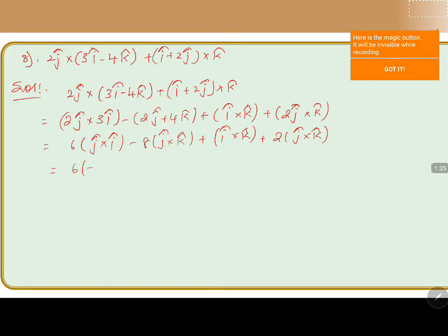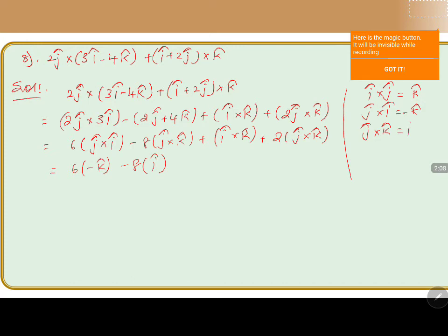That equals 6 into j cross i, which is nothing but minus k cap. According to the result, i cap cross j cap is in order and equals k cap; if we reverse the direction by writing j cap cross i cap, we get minus k cap. The next one is minus 8 into j cap cross k cap, which equals i cap, so j cap cross k cap equals i cap. And i cap cross k cap equals minus j cap.